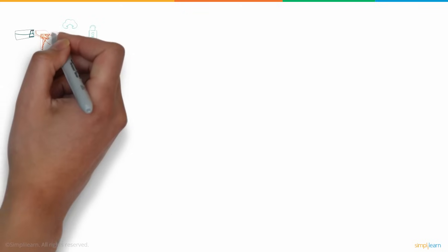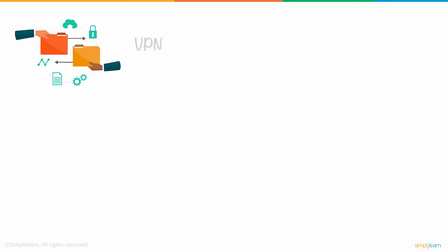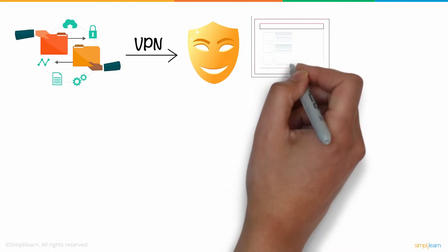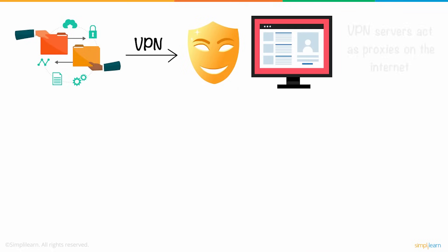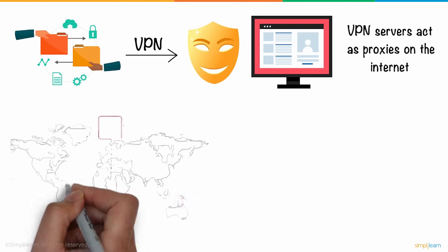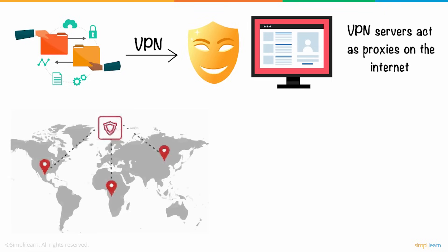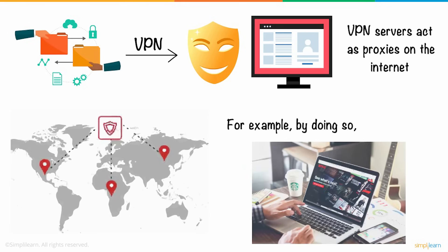In addition to providing secure encrypted data transfer, VPNs are also used to disguise your whereabouts and give you access to regional web content. VPN servers act as proxies on the internet, meaning your actual location cannot be established. VPN enables you to spoof your location and switch to a server in another country, thereby changing your location. For example, by doing so, you can watch content on Netflix that might be unavailable in your region.